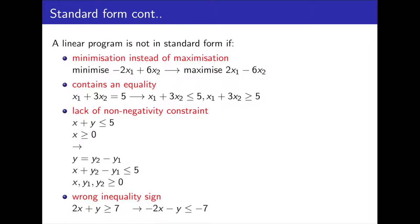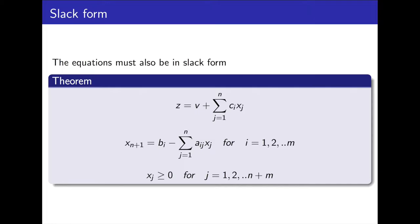Or we have the wrong inequality sign, in which case we flip and negate — so that 2x plus y greater than or equal to 7 becomes minus 2x minus y less than or equal to 7. Now to convert our standard form into slack form.